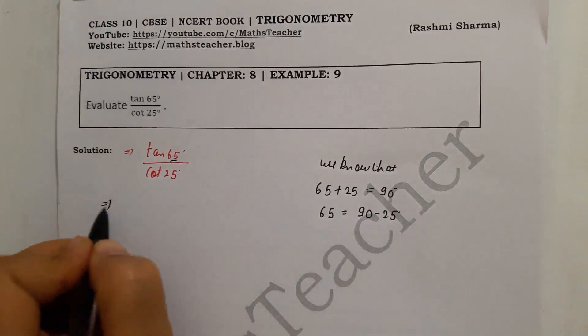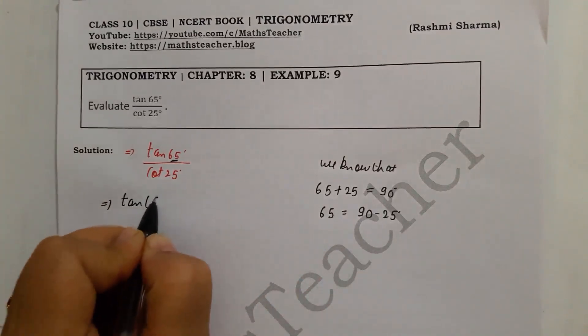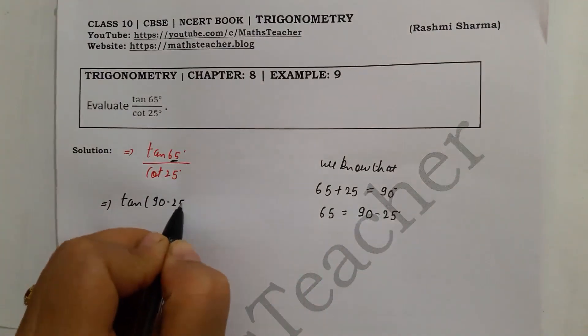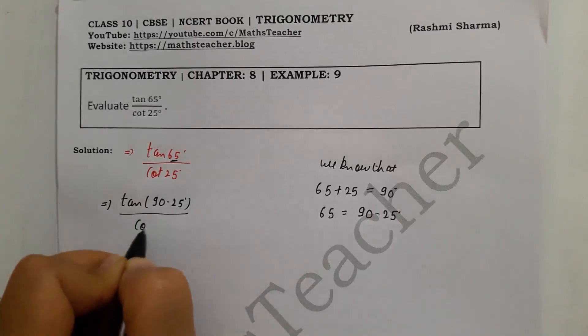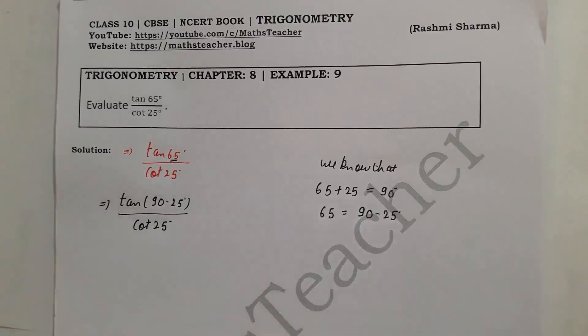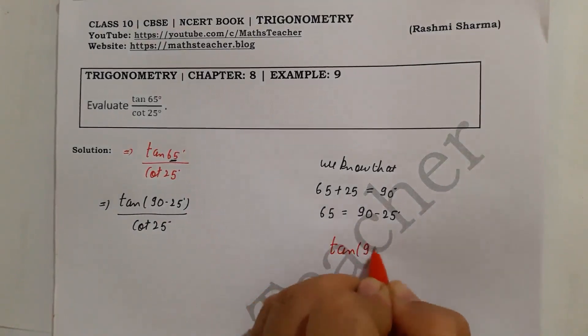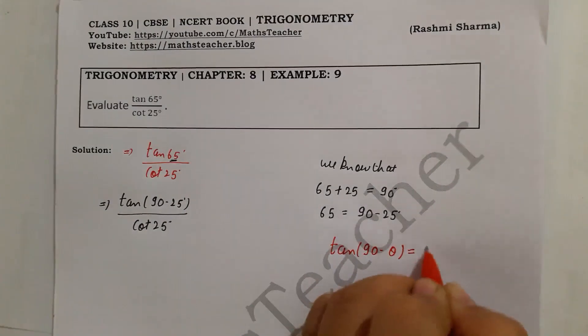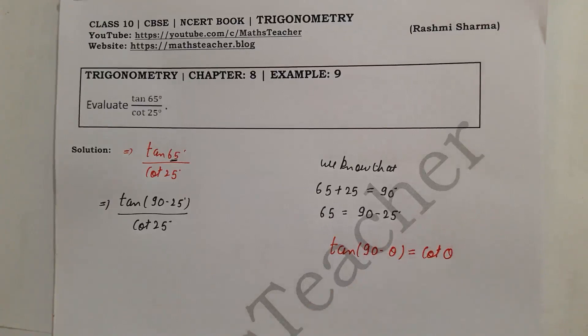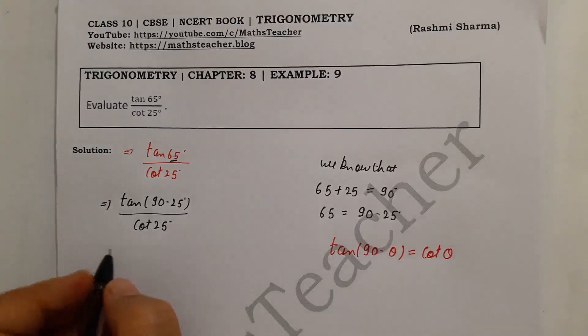This implies tan(65°) equals tan(90° - 25°) divided by cot(25°). Here we know the formula: tan(90° - θ) = cot(θ). We have studied this formula in the introduction part.